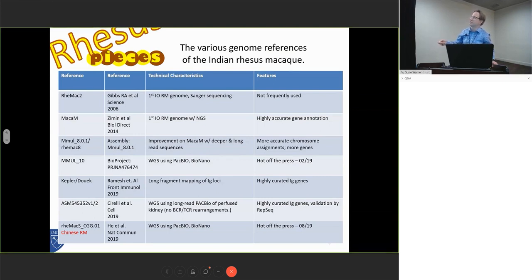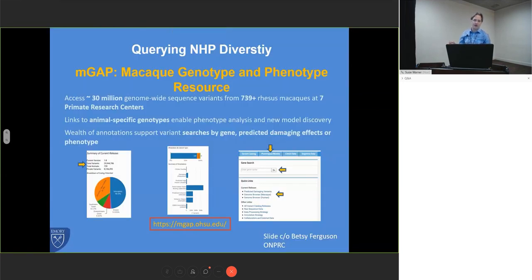I want to also point out that for people who may be interested in looking at allelic diversity outside of the complex immune loci, there's been a huge amount of work by Betsy Ferguson at Oregon, Jeff Rogers, and David O'Connor to try and compile a lot of the genomes we have floating around out there into one comprehensive database.